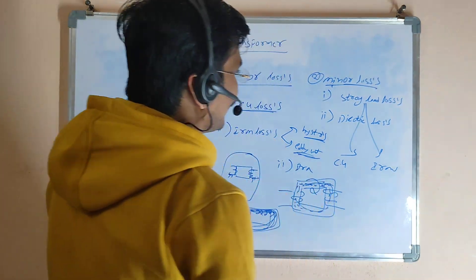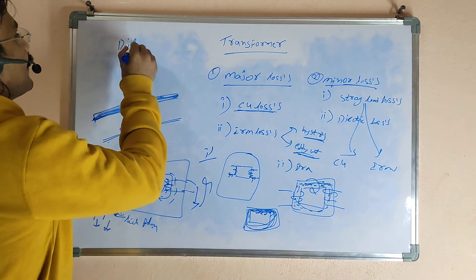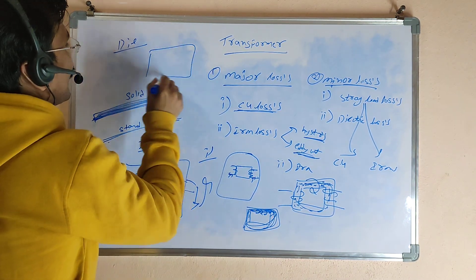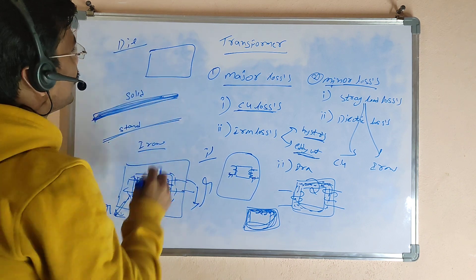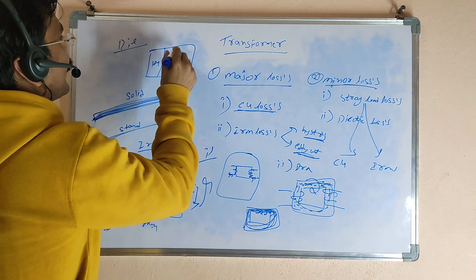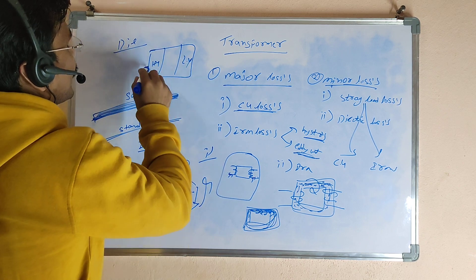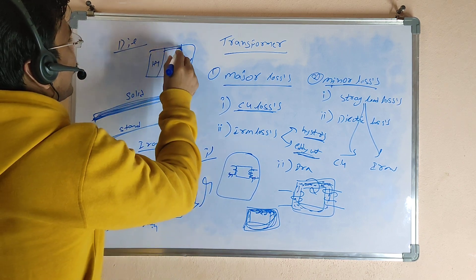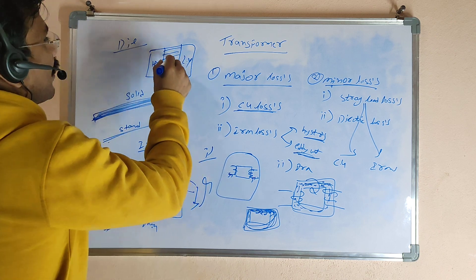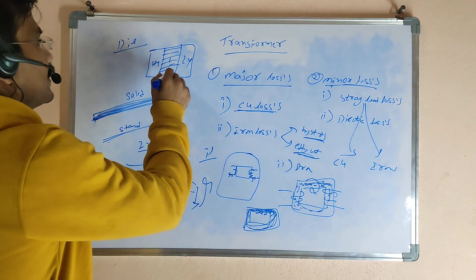The dielectric losses take place in the insulation area. Inside the transformer, there is the core, the HV winding, and the LV winding. The insulation used between the HV winding and LV winding is where the dielectric losses take place.